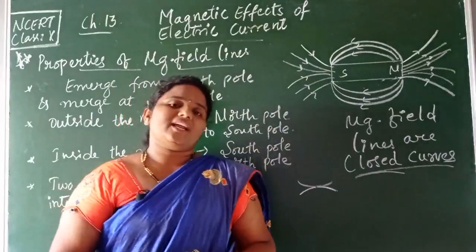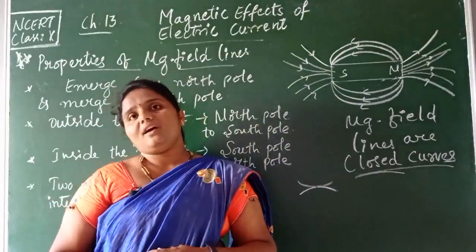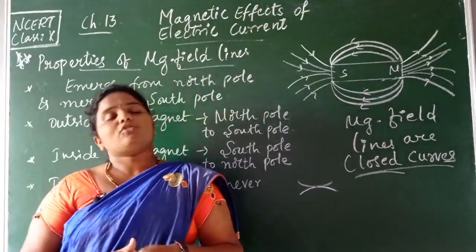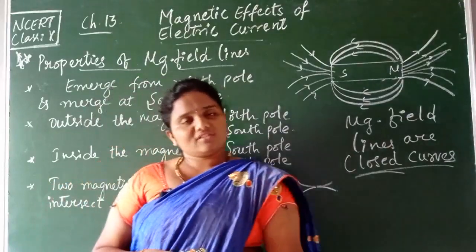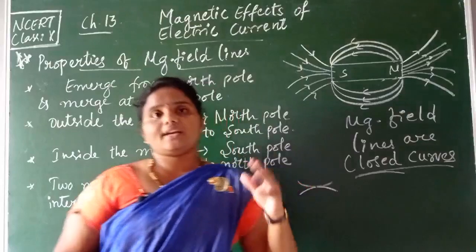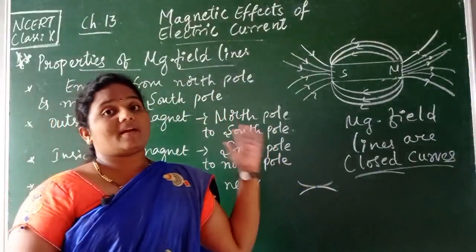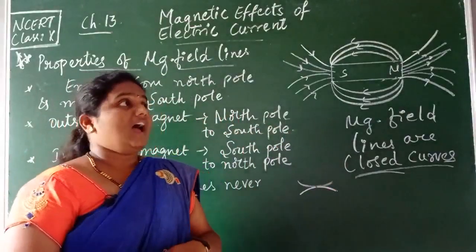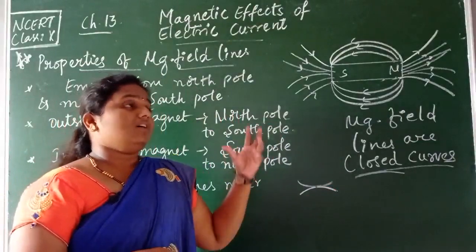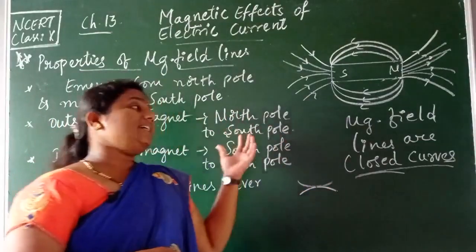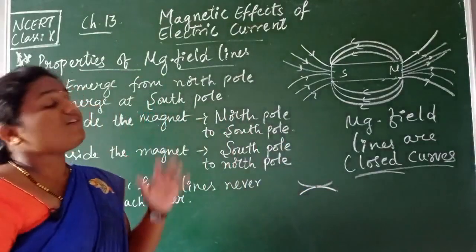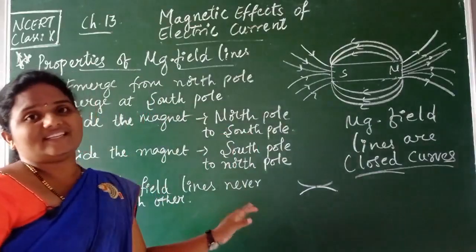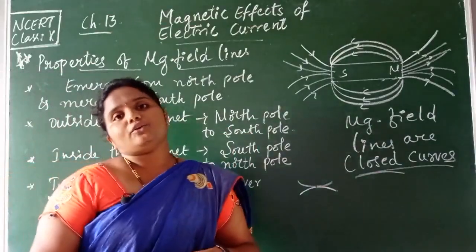In today's class, we learned what a magnet is and its types. We also studied what magnetic field means, what magnetic field lines are, and the properties of magnetic field lines. Read thoroughly to become thorough with this chapter.